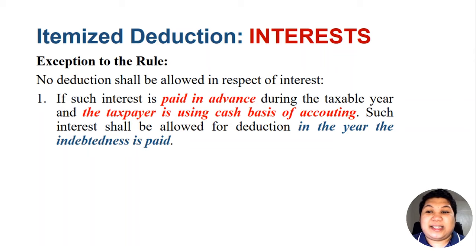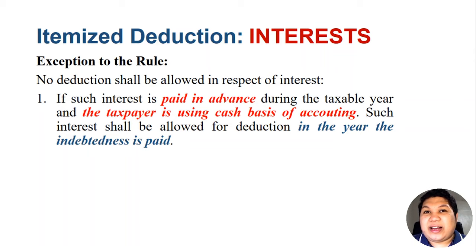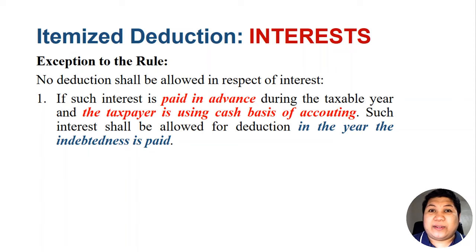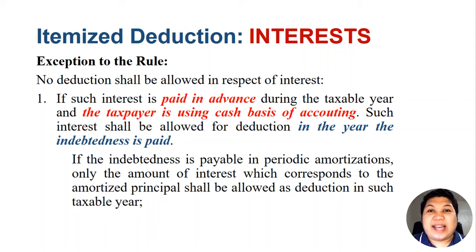For example, if you are a cash basis taxpayer engaged in a servicing business using cash basis of accounting, and you have paid in advance the interest of a loan connected to your business, those advanced payments of interest cannot be deducted from your gross income. If the term of the loan is three years, you can only deduct those advance-paid interest in the year when the principal amount is fully paid. If the indebtedness is payable in periodic amortizations, only the amount of interest which corresponds to the amortized principal shall be allowed as a deduction in that taxable year.